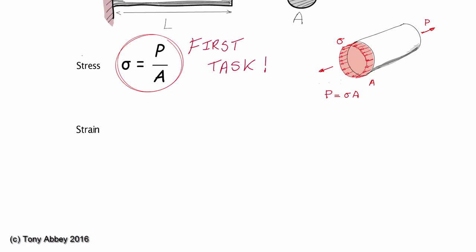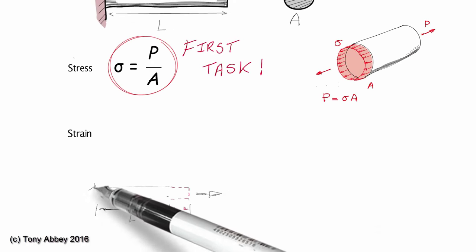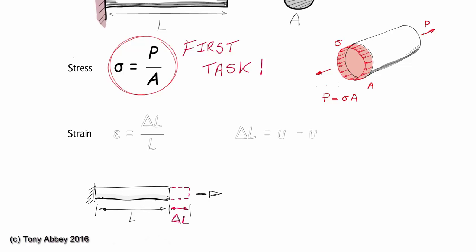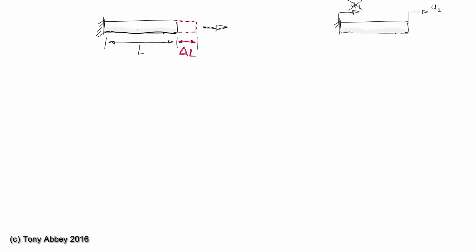For the second task, we begin by looking at the strain. Now, engineering strain is the change in length divided by the original length. The change in length is U2 minus U1. But in our case, the left hand side is built in. The strain is just U2 at the free end divided by the length L.